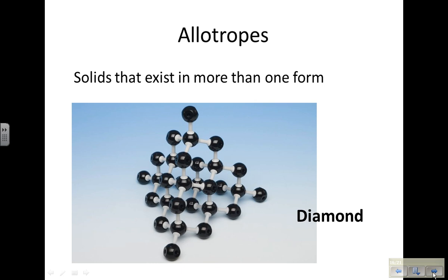Another term that applies to solids is the term allotrope, and an allotrope refers to solids that exist in more than one form. We're going to look at allotropes of carbon, and I have three examples for you.